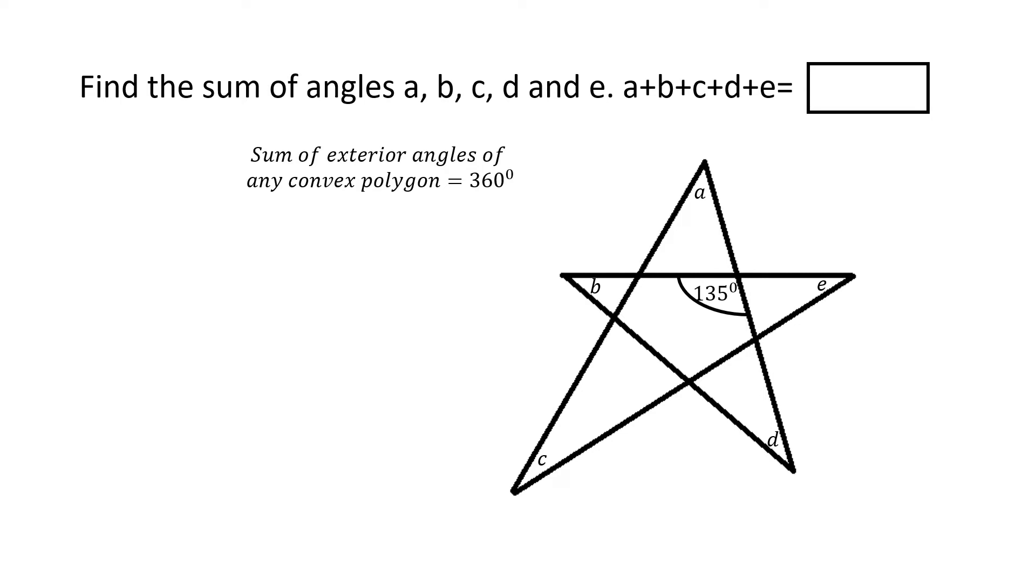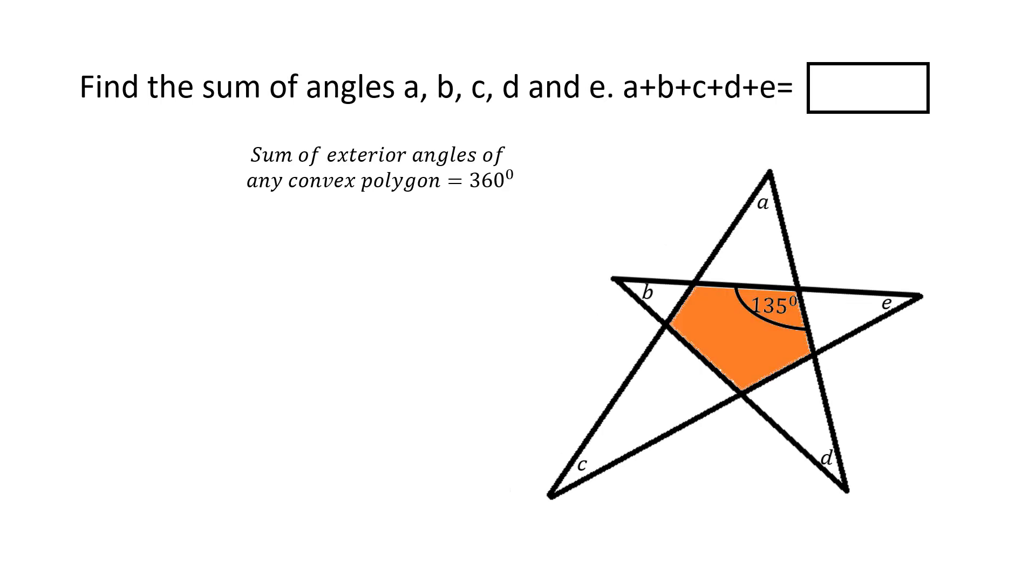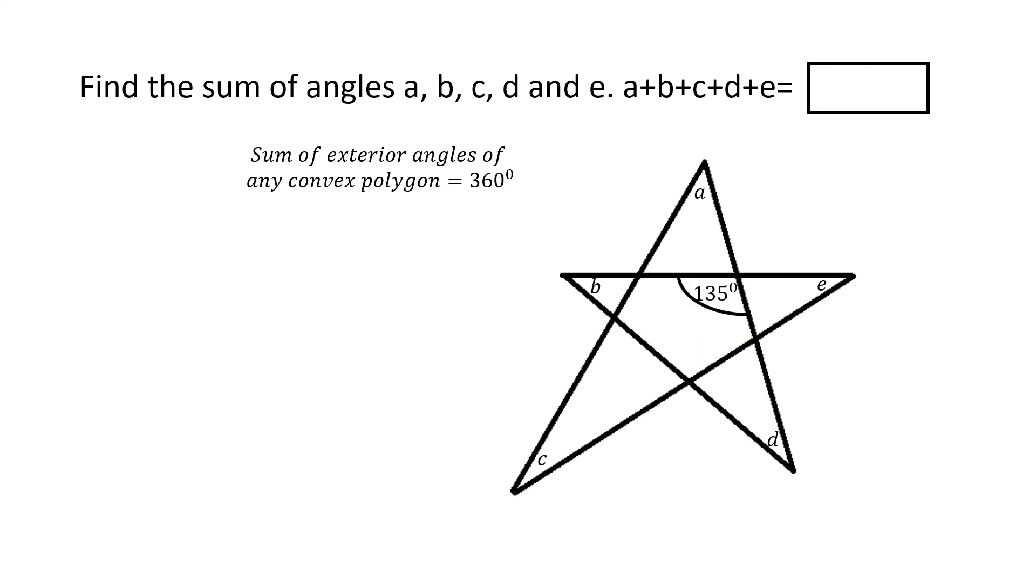If you look at this figure, in the middle we basically have a five-sided convex polygon. It's a pentagon. And one of the first things that we can do is mark up what the exterior angles of this pentagon are.